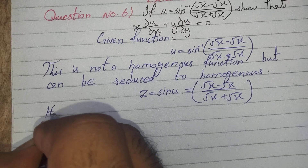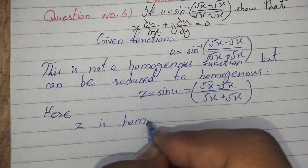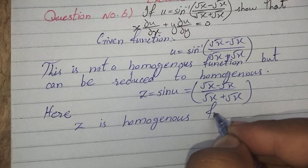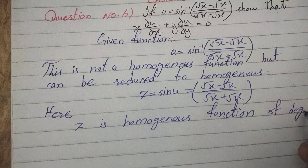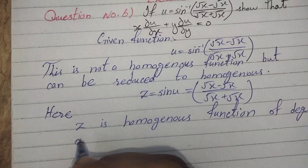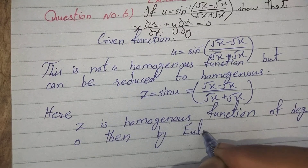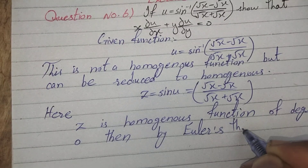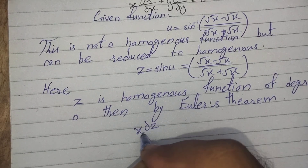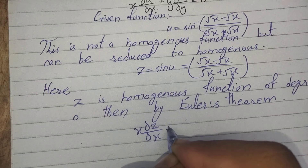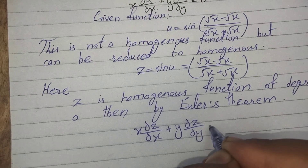Here z is a homogeneous function of degree 0. Then by Euler's theorem: x(∂z/∂x) + y(∂z/∂y) = 0.